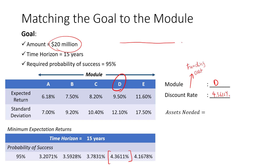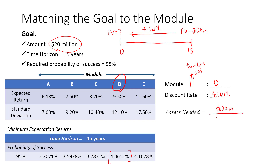How much assets is needed to be invested in module D? Based on the required amount of $20 million needed in 15 years time — the required future value — and based on minimum expectations of 4.3611%, it is a simple present value problem. We take $20 million divided by (1 + 0.043611) to the power of 15, and we obtain $10.54 million. So the client will have to allocate $10.54 million into module D, so that within 15 years, there is a 95% probability that the client will be able to have $20 million — or it could be more — but that is the minimum probability needed to achieve that goal.